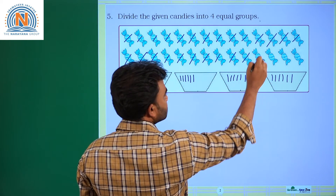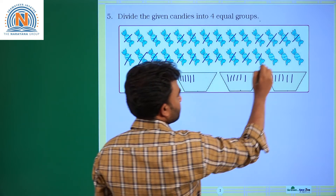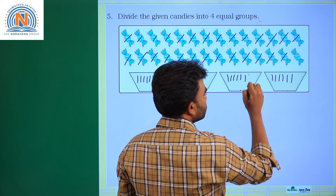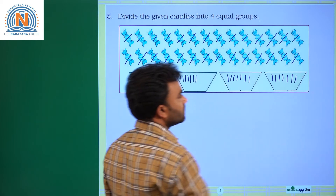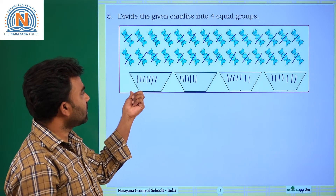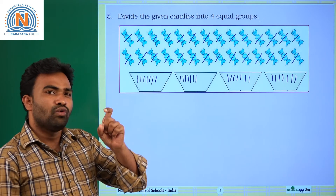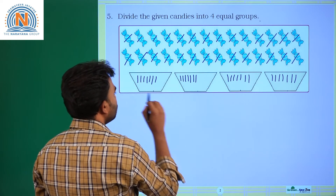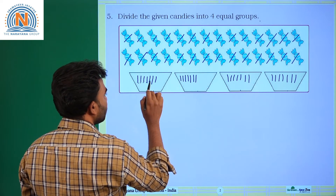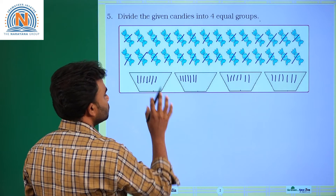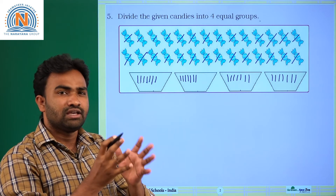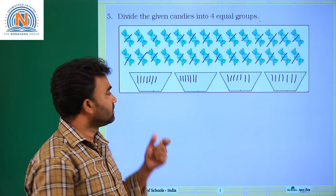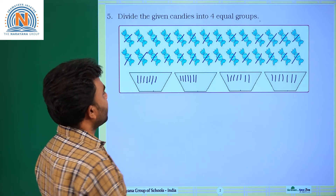Four more candies: first to group one, second to group two, third to group three, fourth to group four. Here, one line indicates one candy. Then how many candies are there in each group? Let us count: one, two, three, four, five, six, seven. So seven candies are there in group one.